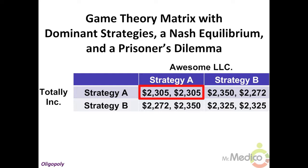In the diagram that you see here, Totally Ink's dominant strategy is Strategy A, because $2,305 is greater than $2,272, and $2,350 is greater than $2,325. Awesome LLC's dominant strategy is also Strategy A, because $2,305 is greater than $2,272, and $2,350 is greater than $2,325.